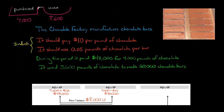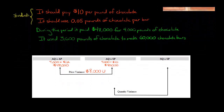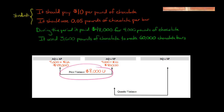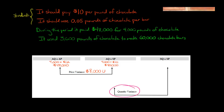I like to set things up with three columns: AQ times actual price, AQ times standard price, and then SQ times standard price. The difference between the first two is the price variance, and the difference between the last two is the quantity variance — that's what I'm going to show you how to calculate.